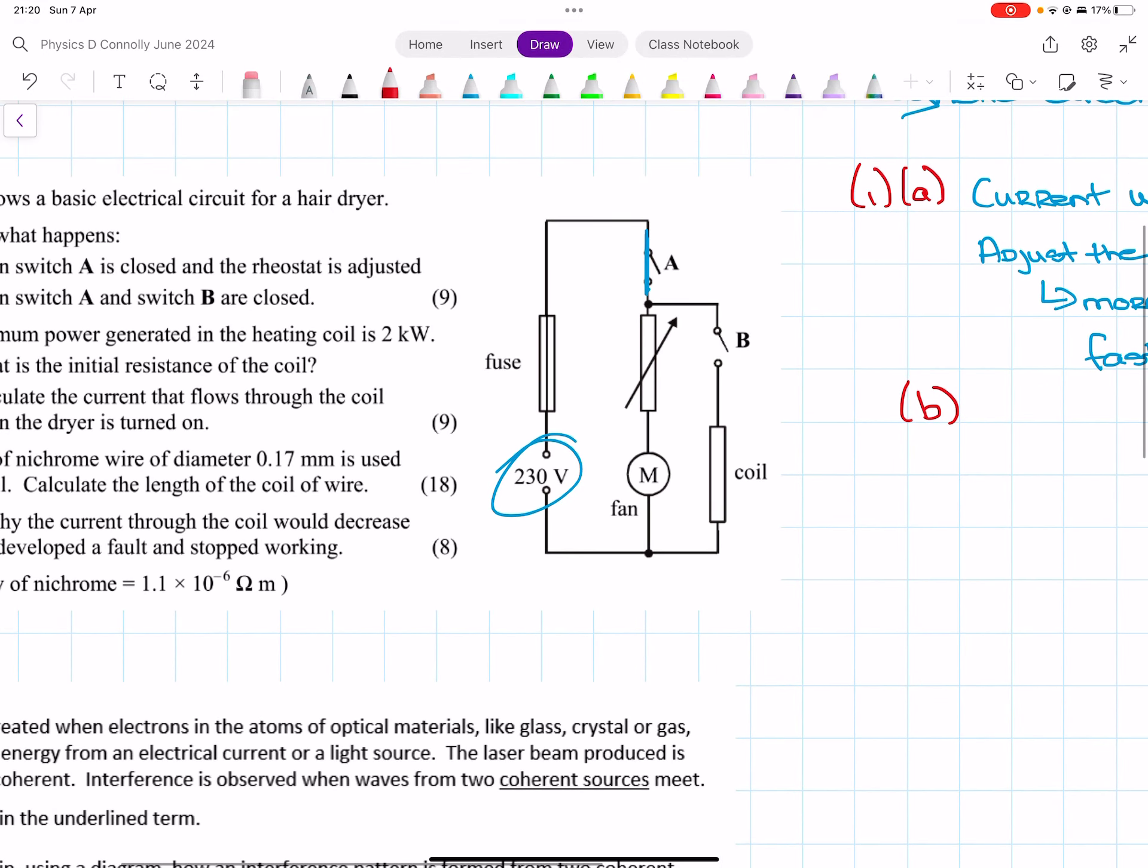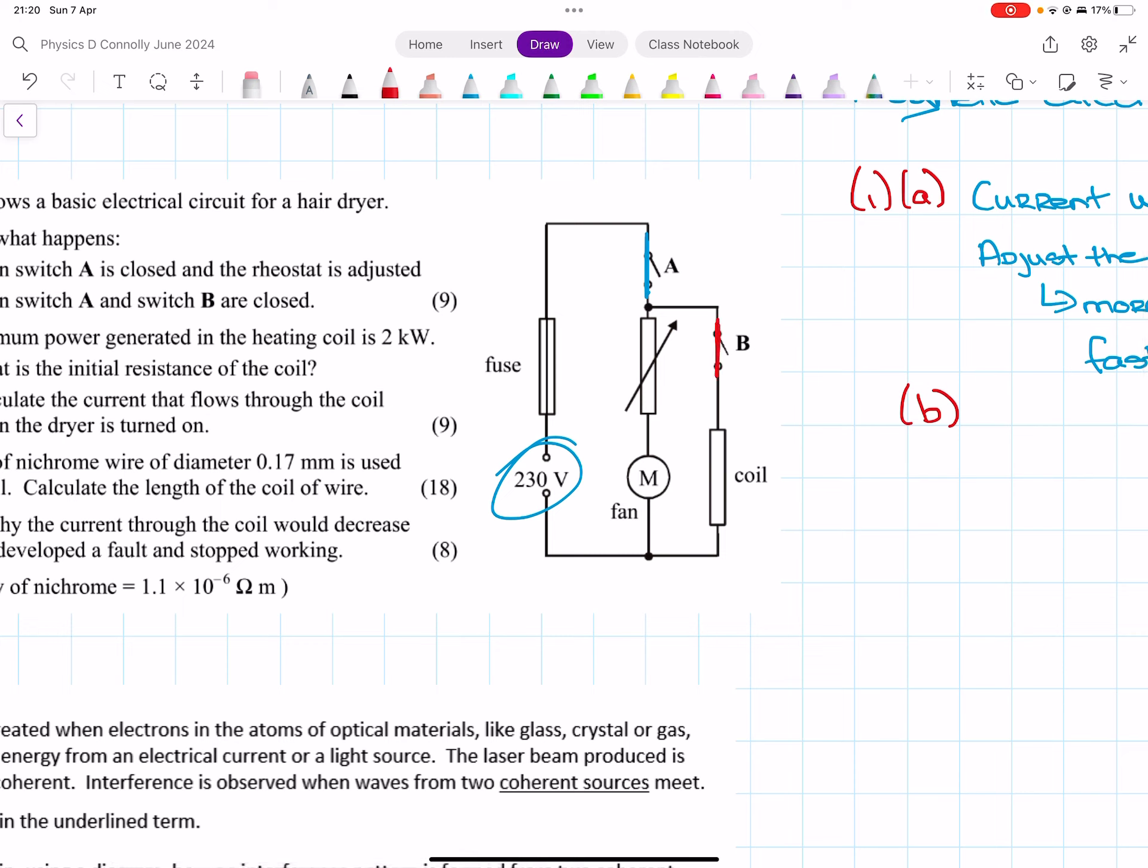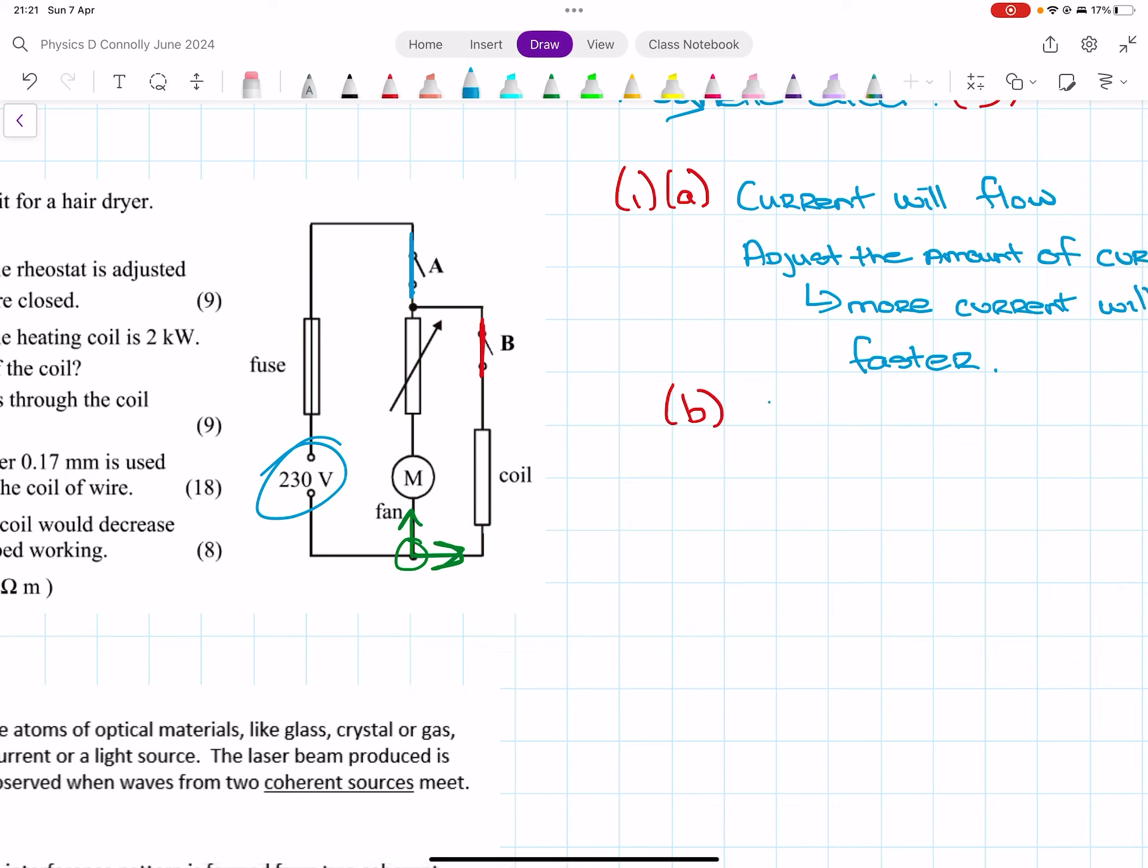When switch A and B are closed, so if we then close B as well, the current flows. When it gets to here, some of it will go through the fan and some of it will go through the coil. So it will heat up, and then instead of the fan just blowing air or just rotating, it will blow hot air.